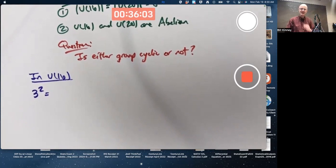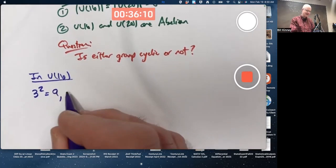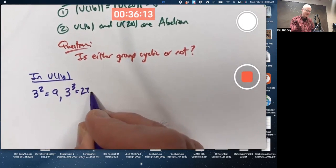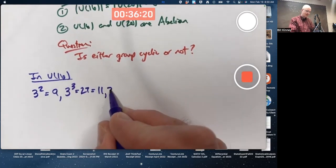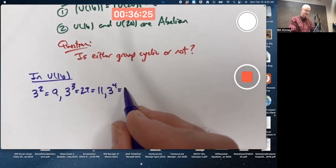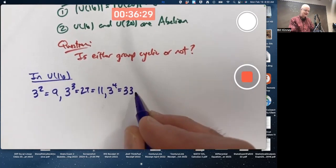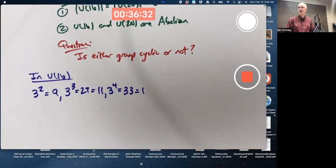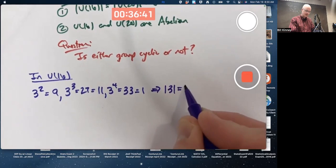I'll have my calculator ready just in case. We're doing multiplication mod 16. 3 squared is 9. 3 cubed is 27, which mod 16 is 11. 3 to the 4th is 81 — also 3 times 11 — which mod 16 is 1. So 3 has order 4.